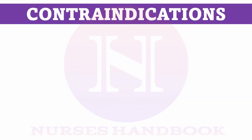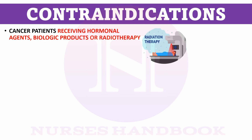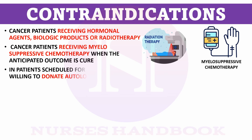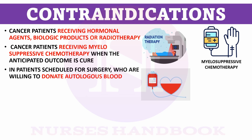The contraindications for the use of injection erythropoietin are: 1. Cancer patients receiving hormonal agents, biologic products, or radiotherapy. 2. Cancer patients receiving myelosuppressive chemotherapy should not be given this injection. 3. Patients willing to donate autologous blood.